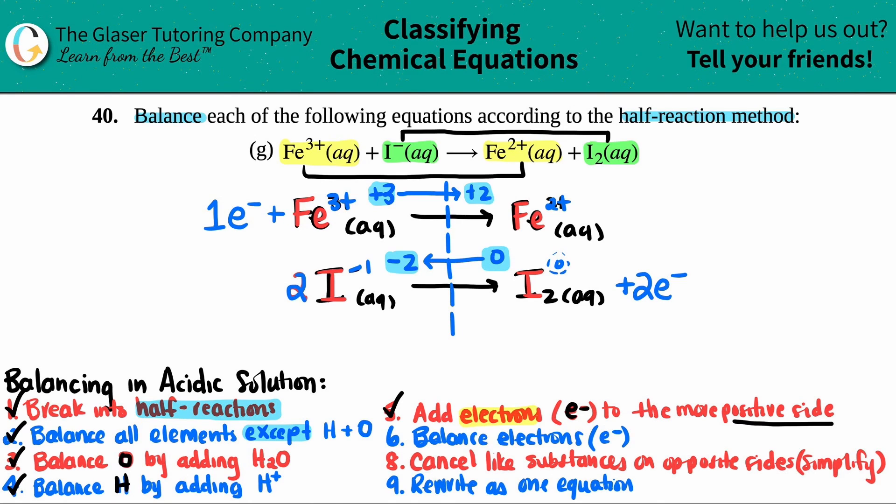And now I added those electrons. And this is a good check. The electrons that you added should be on opposite ends of this divider. If your electron that you added was on the same side as the divider, go back. Try again. Start from the beginning. Something went wrong. So now I'm just going to clean this up a little bit. We don't really need the math anymore. So I'm just going to get rid of all this junk.